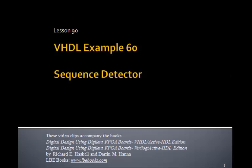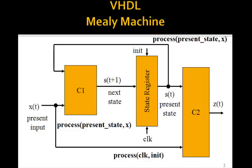This is lesson 90, VHDL example 60. In this example, we'll write a VHDL program to implement the state machine for the sequence detector that we derived in the last lesson.